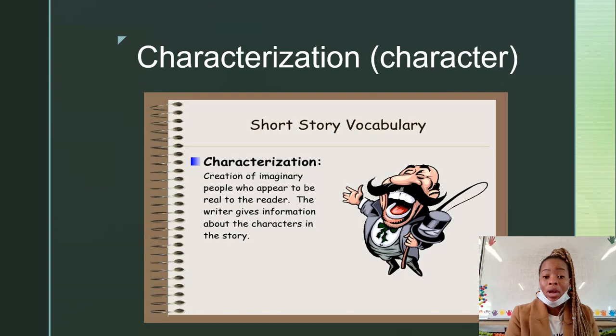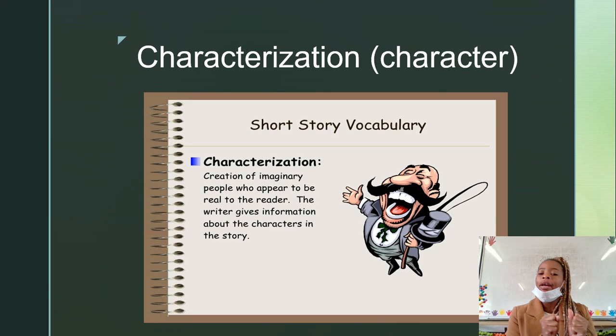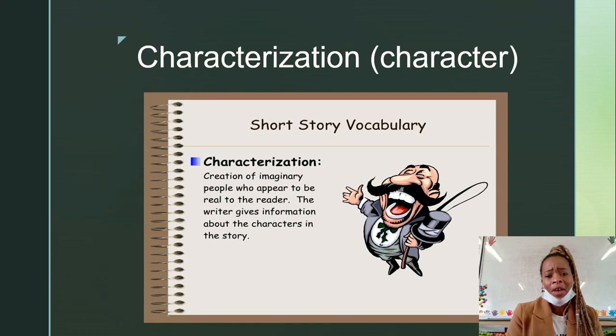Now, characterization. This is a creation of imaginary people in your story. You can write a story about Ms. Meshilo and her siblings. So the characters would be Ms. Meshilo and the siblings that she has. Now, it's also important to make people aware what kind of a person they are. So is it a nice, fun, bubbly person? So this is the characterization of your character.